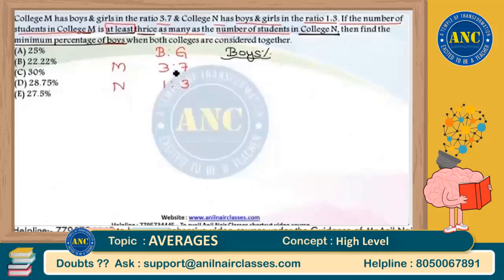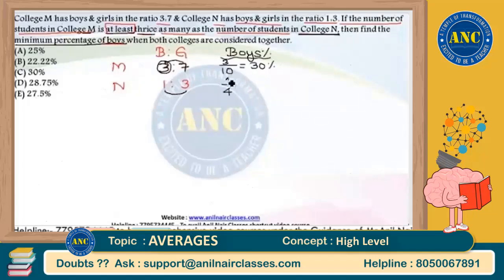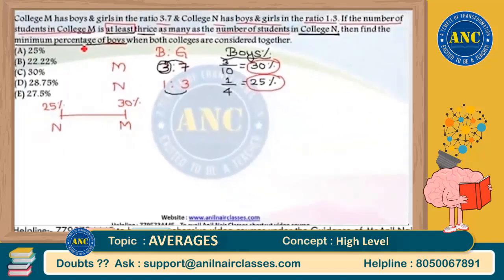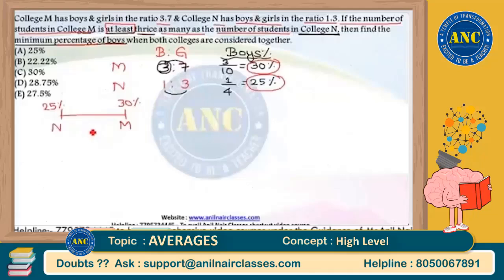Think logically. In College M, boys to girls is 3:7, so out of 10 students, 3 are boys — that's 30% boys. In College N, boys to girls is 1:3, so out of 4 students, 1 is a boy — that's 25% boys. So the boys percentage lies in the range of 25% to 30%.